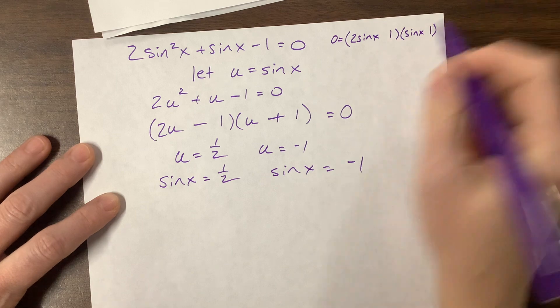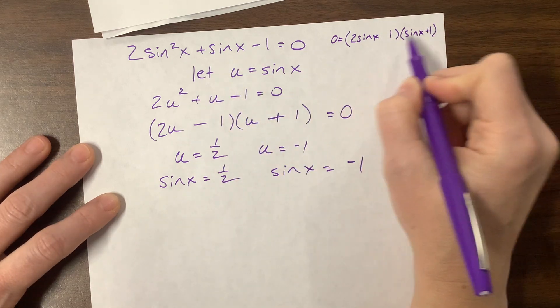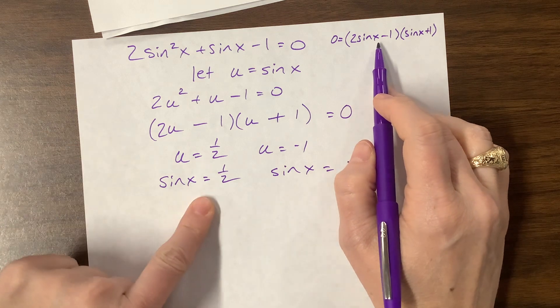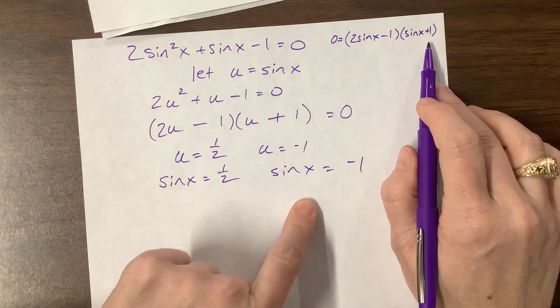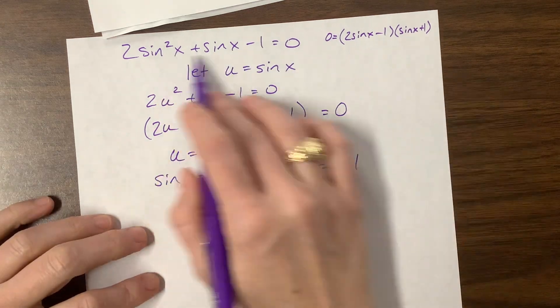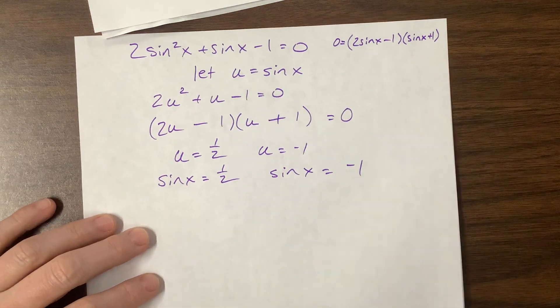And then a 1 and a 1. Let me double check. This one needs to be the positive one, this one needs to be negative. Therefore, this means sine of x equals positive 1/2, and this gives me sine of x equals negative 1. If you can go straight from here to here, more power to you. But if you can't, feel free to do the u-substitution.